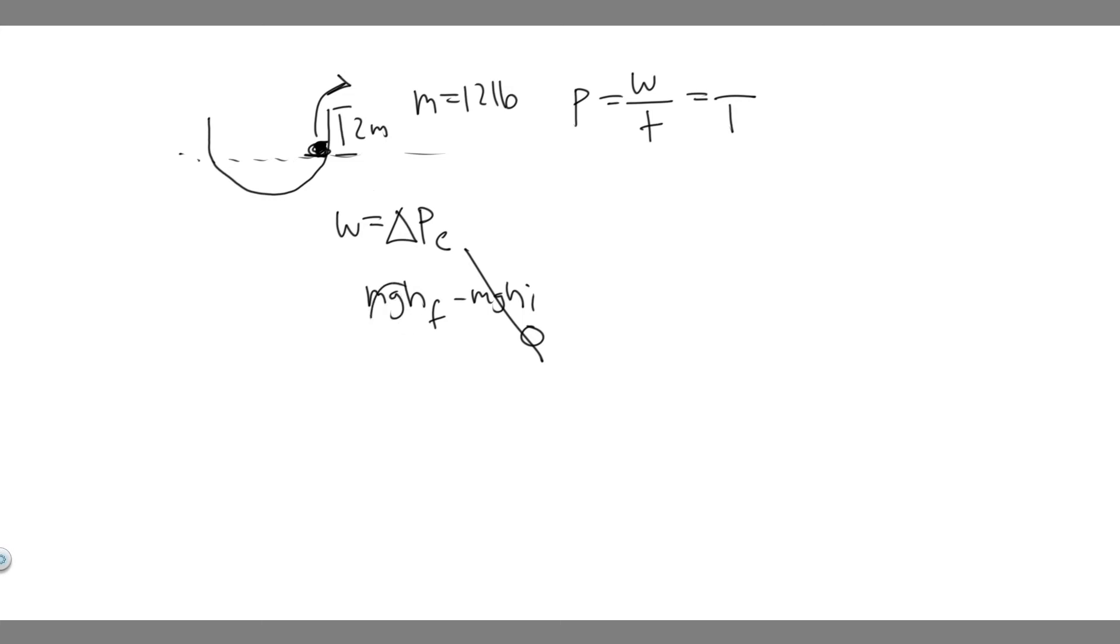The work is going to equal its mass. They give us the mass is 12 pounds, but we need to make sure it's in kilograms. So 12 pounds is equal to 5.44 kilograms. Let me rewrite it up here: mass equals 5.44 kg.